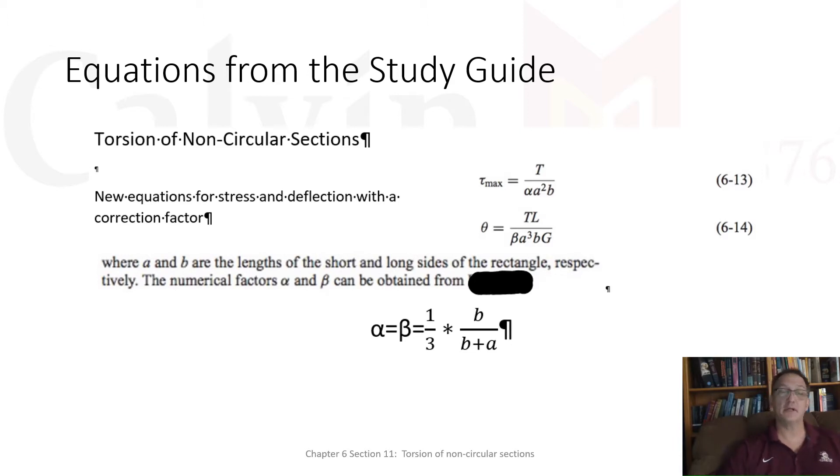And then the other equation is the equation for deflection, which is now TL over, and then there's this term beta A cubed B, which is the geometry term, and then there's the G, which is the material term. So we've still got a pseudo force in green, a length, and then geometry and material.